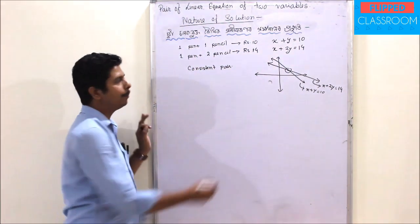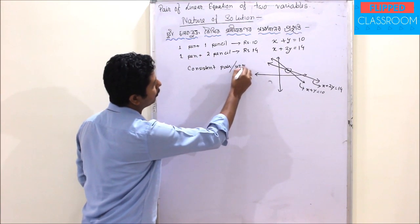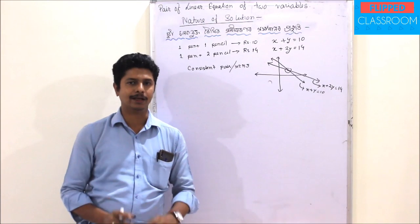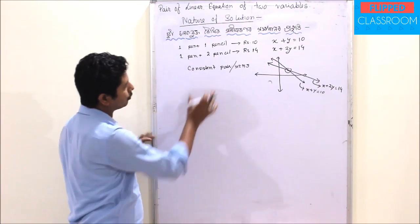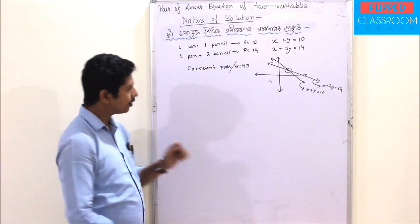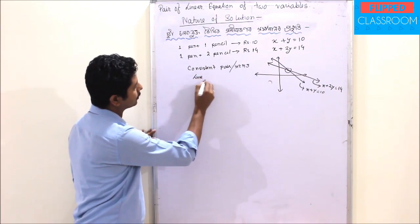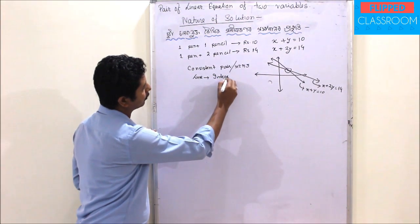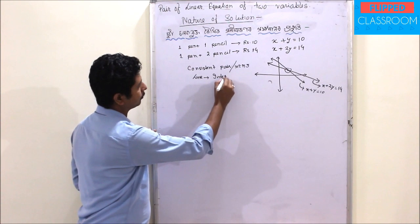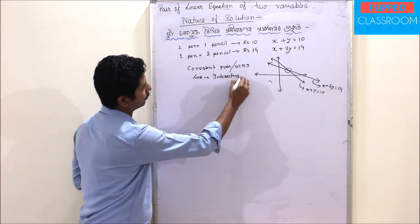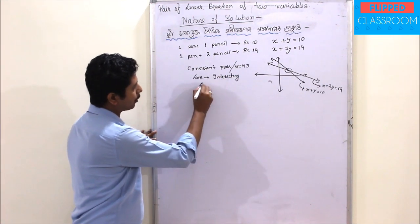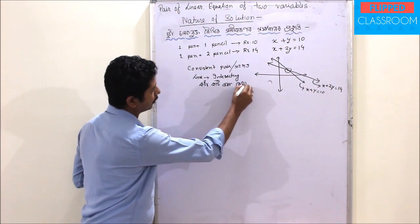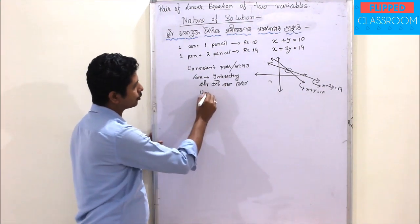This is a consistent pair. And if we have a homogeneous line, it is an intersecting line. So it is a line of contact, and it has a unique solution.